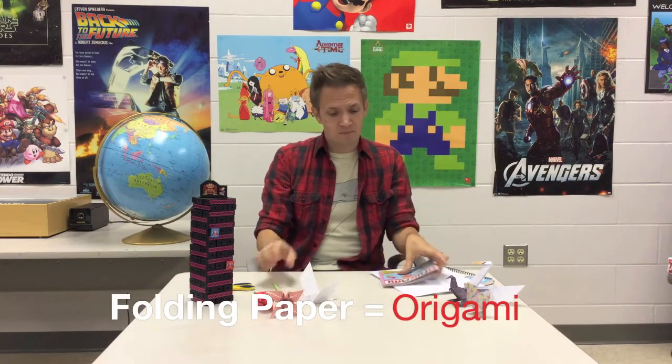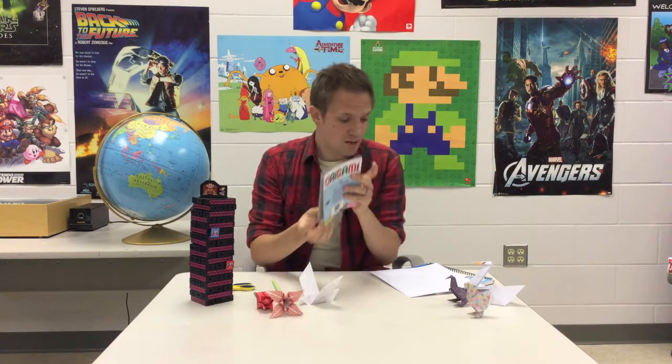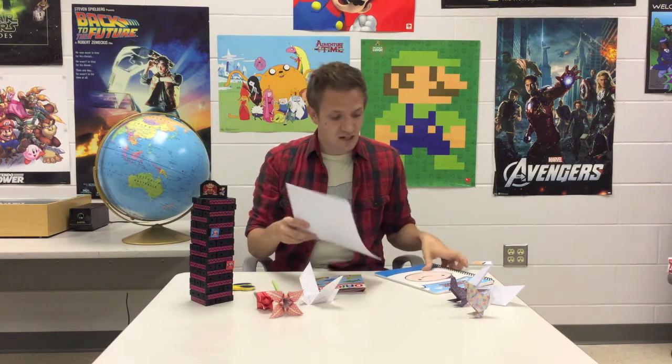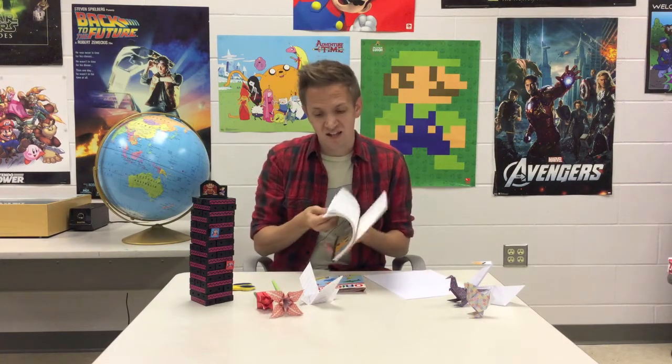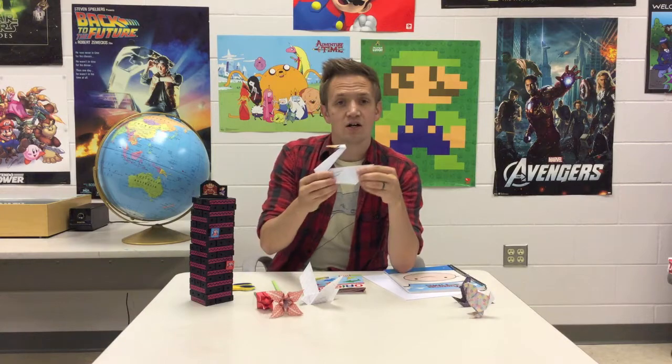To make origami all you need is a piece of paper. You can buy fancy paper that has patterns in it or you can use copy paper from a printer. If you're really desperate you can use notebook paper that has lines and holes and rounded edges, but it's still paper and you can still make stuff. Today I'm going to show you how to make a swan.